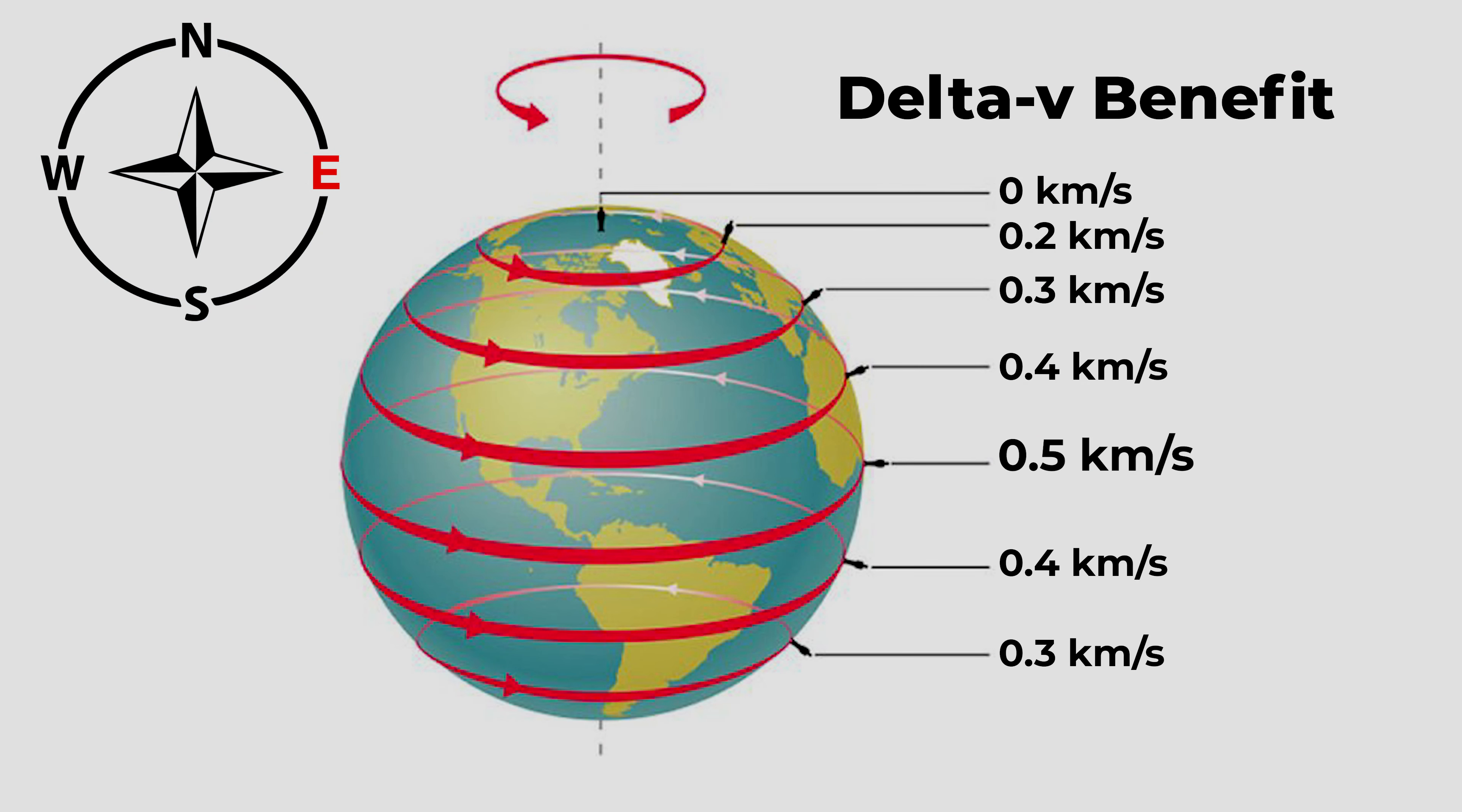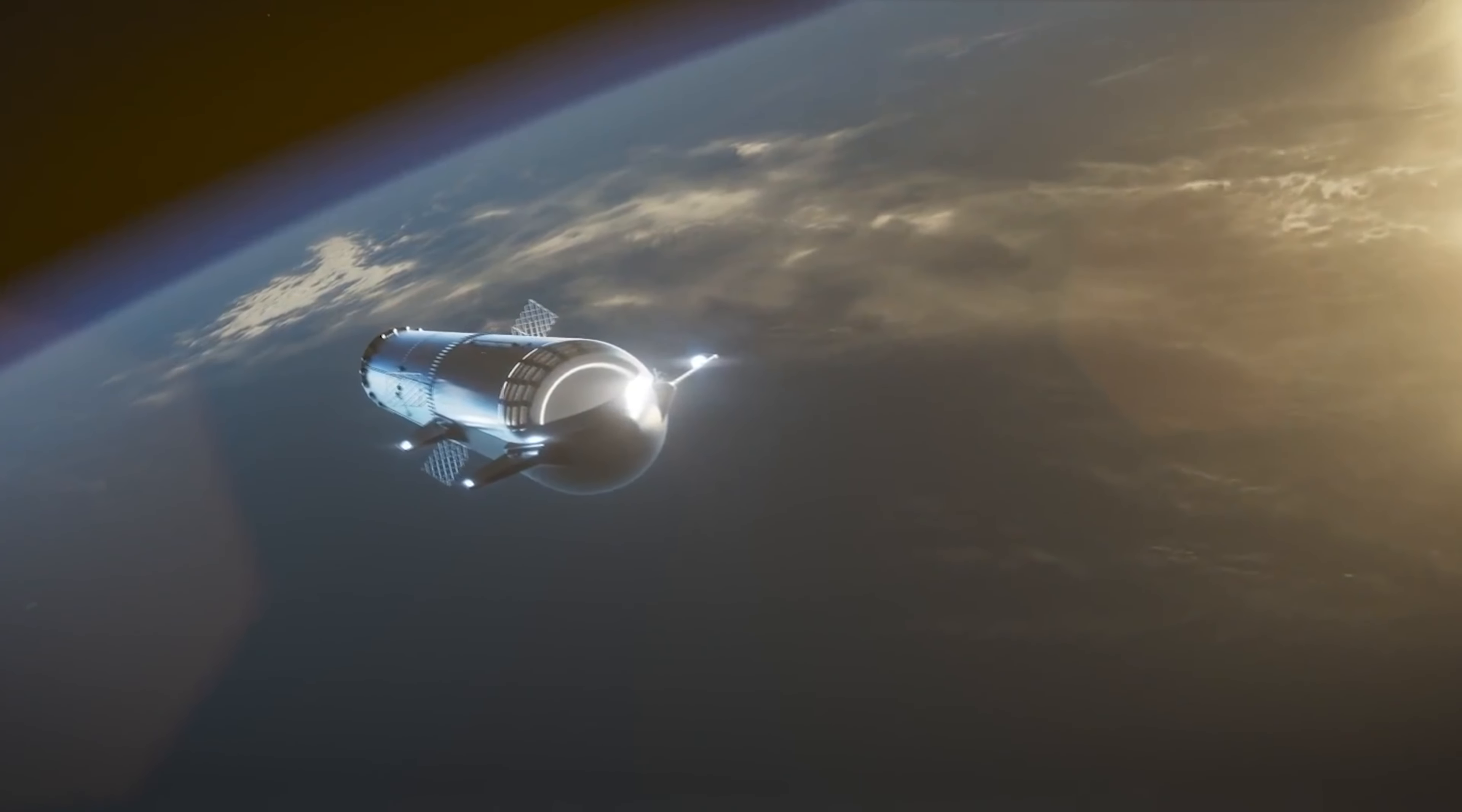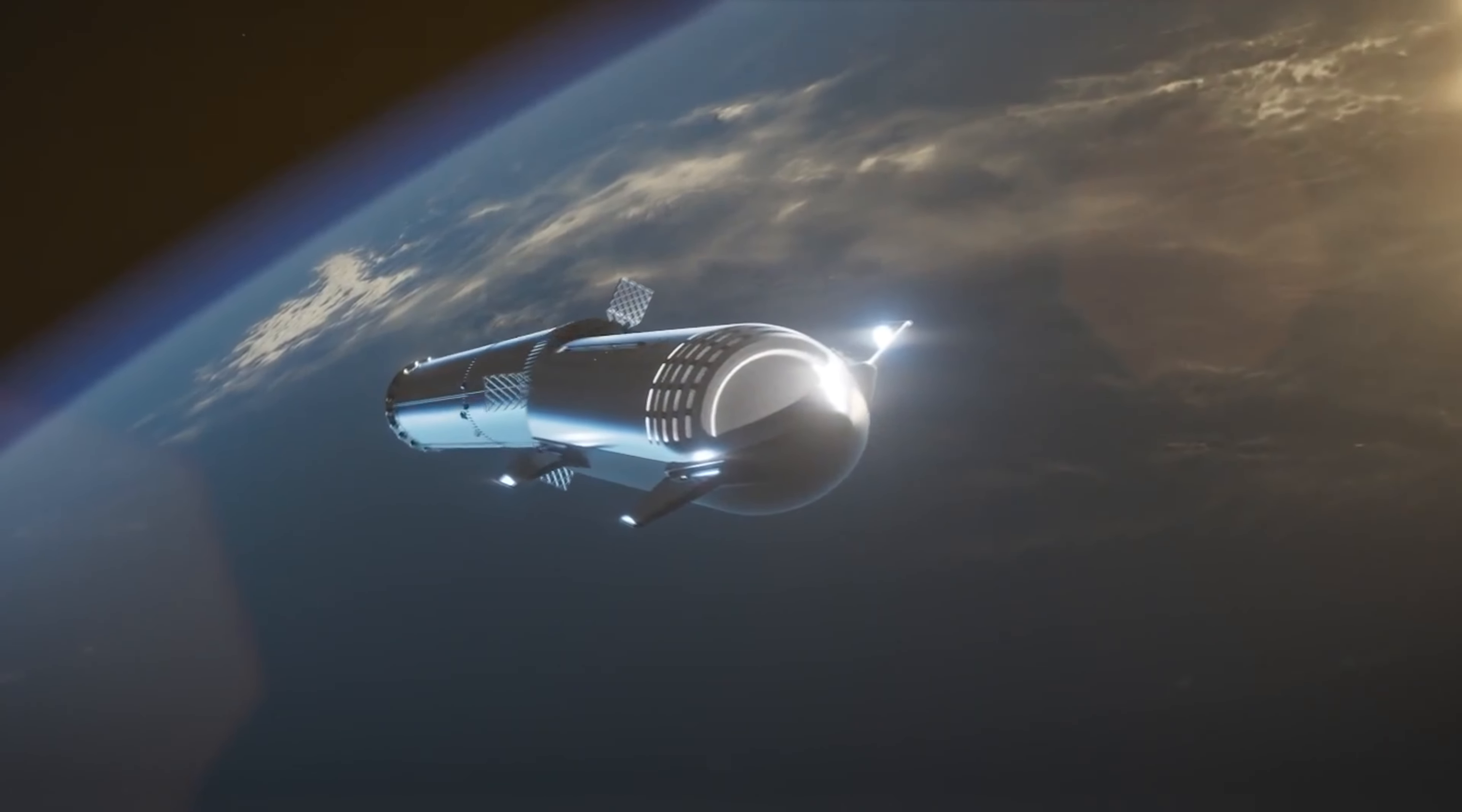We'll want to begin our journey to Mars by launching eastward from a launch pad near the equator. By doing so, we can get a free delta-v of 0.5 kilometers per second from the rotation of the Earth.